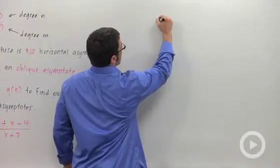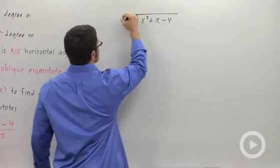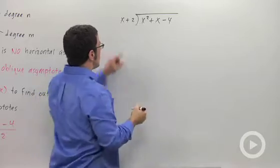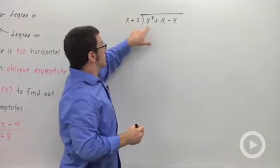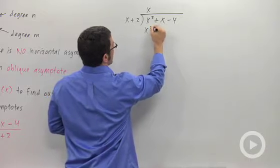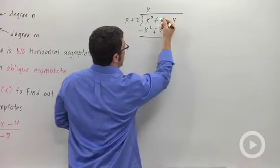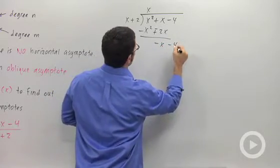We have x squared plus x minus 4 divided by x plus 2. And so what do we need to multiply by x to get x squared? X. So we multiply through and we get x squared plus 2x. We change the signs and add, and we get negative x minus 4.